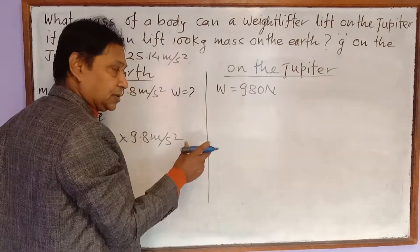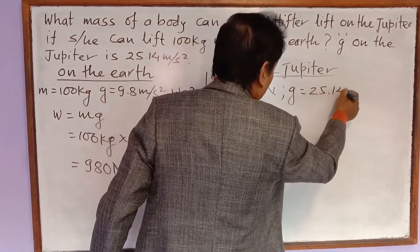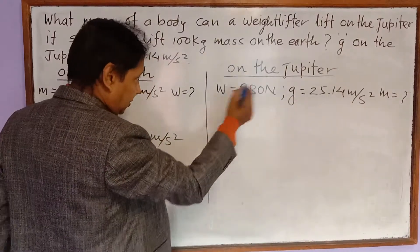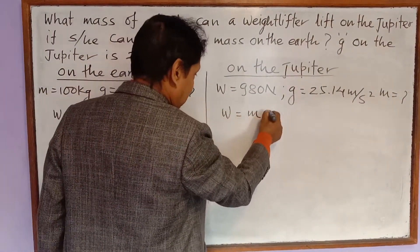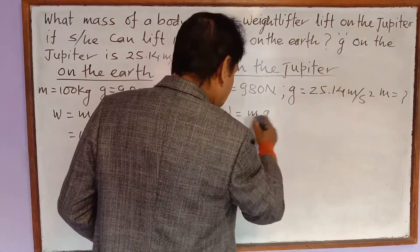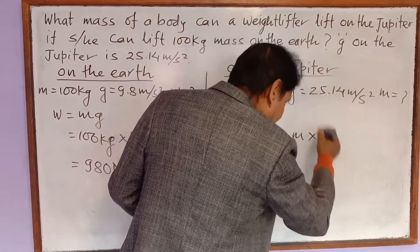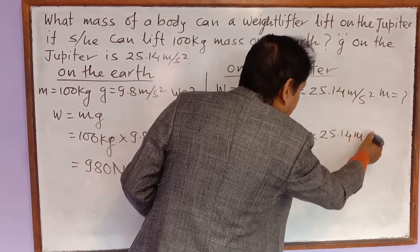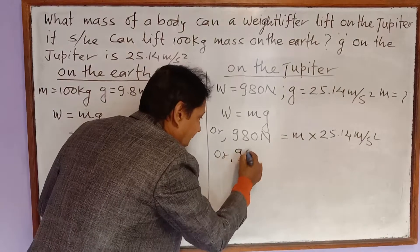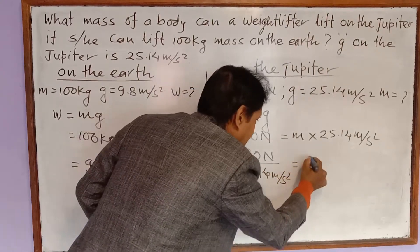The value of g on Jupiter is given as 25.14 meters per second square. Now, what amount of mass can he lift there? We use the same equation: W = mg. So 980 Newtons equals mass times 25.14 meters per second square. Taking 25.14 to the left-hand side, we get: mass equals 980 Newtons divided by 25.14 meters per second square.